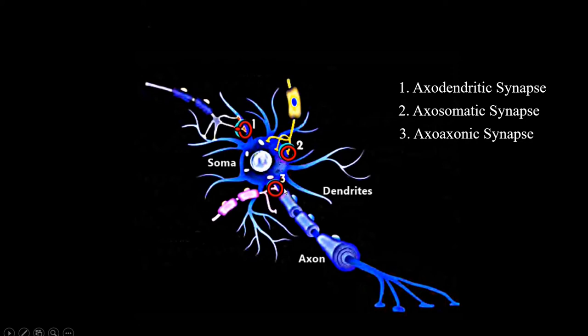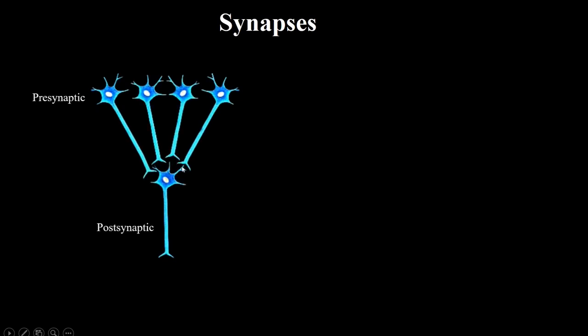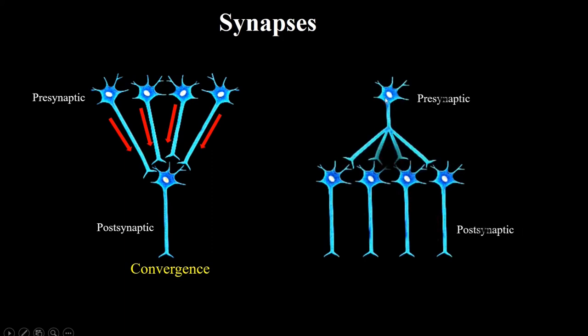Sometimes hundreds or even thousands of synapses from different presynaptic neurons can affect a single postsynaptic neuron, which is called convergence. But it is also possible that a single presynaptic neuron can send branches to affect many other postsynaptic neurons, which is called divergence.